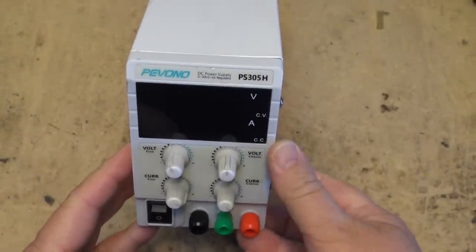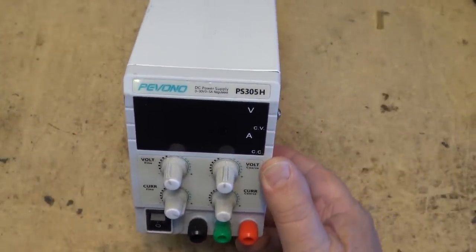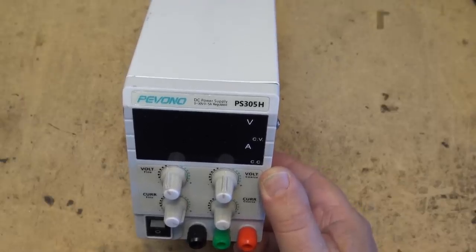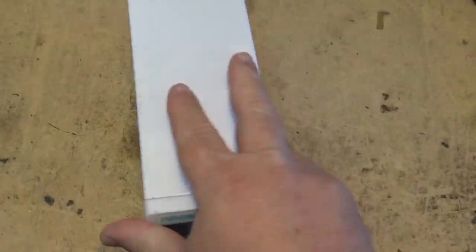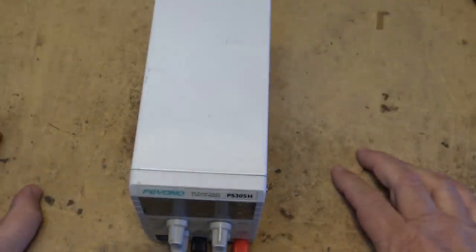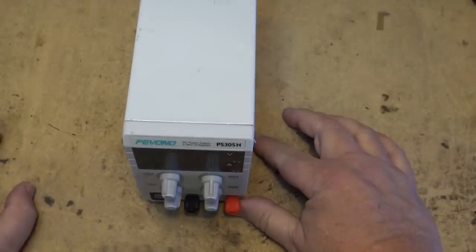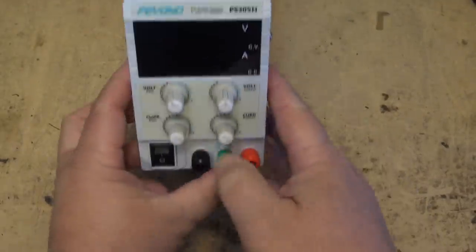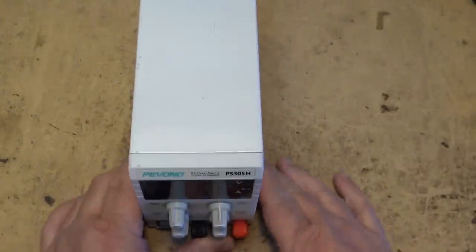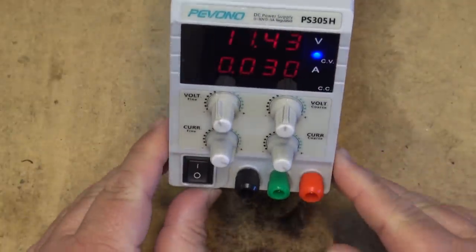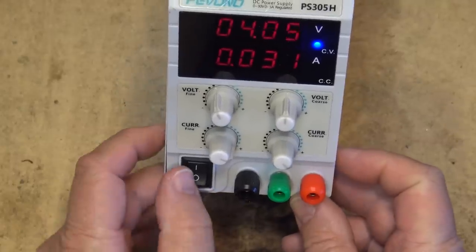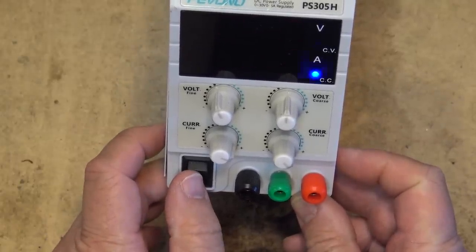A while back you probably saw me do a video for this power supply, the Pivono PS-305H. When I first did the review I thought it wasn't a bad unit, other than the fact that the bracket at the back wasn't secured down. I ended up gluing it, but the power supply didn't last. I managed to blow it up good. When I turned it on it would show 24 volts and just go down to zero with no power output.